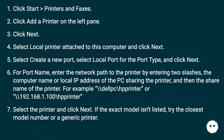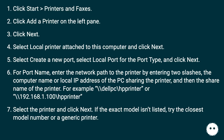In Windows XP: Click Start, then Printers and Faxes. Click Add a printer on the left pane. Click Next. Select local printer attached to this computer and click Next. Select Create a new port, select local port for the port type, and click Next. For port name, enter the network path to the printer by entering two backslashes, the computer name or local IP address of the PC sharing the printer, and then the share name of the printer. For example: \\delpc\hp printer or \\192.168.1.100\hp printer.